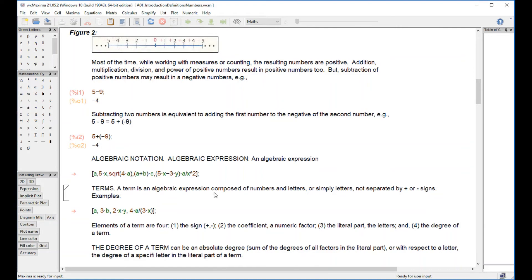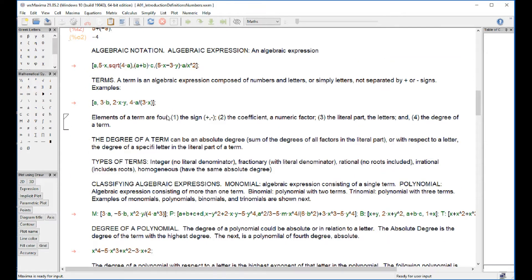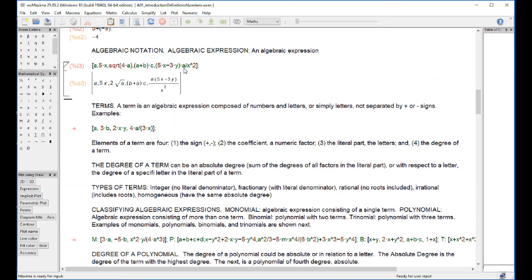Then we're going to algebraic notation. What is an algebraic expression? Anything that combines coefficients with letters and numbers. What I have here is a list - a series of elements separated by commas and enclosed with brackets. If I click on top and do shift-enter, there's this first element a, then there's 5x, and there's 2√(ab) + ac, and a(5x - 3y)/x².